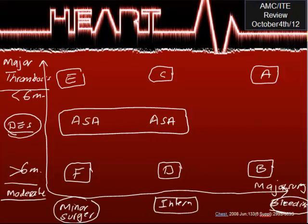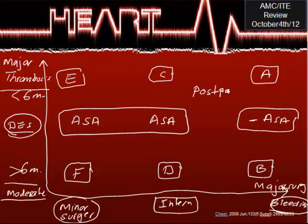The question is: if there is major bleeding risk combined with major or even moderate thrombosis risk, you will stop aspirin. This is the only time you stop aspirin. However, the first step is always to try to postpone the surgery — ideally for six months to one year. Only if you cannot postpone the surgery do you stop aspirin. So: minor or intermediate surgery → continue aspirin; major surgery → consider the duration, and stop aspirin only if you cannot postpone.